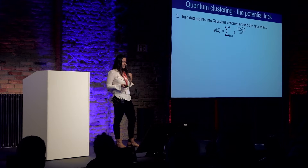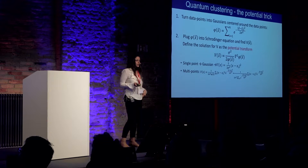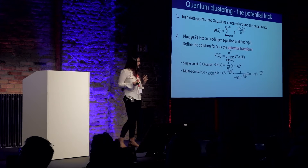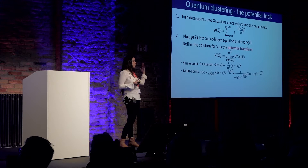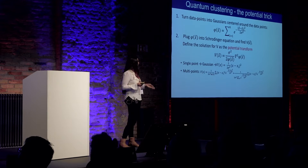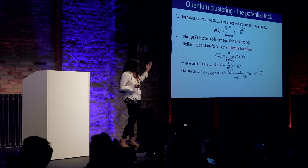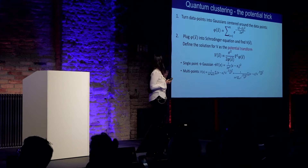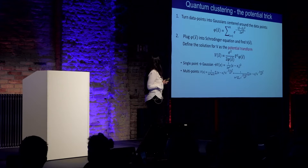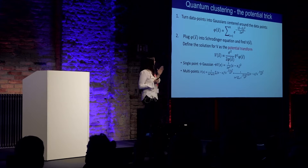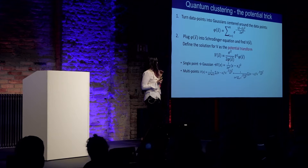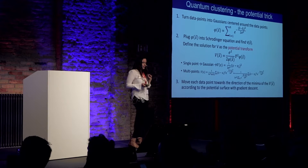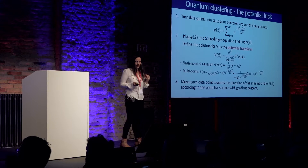As this is a probability distribution, we can plug it into the Schrödinger equation to find the potential. The Schrödinger equation is normally used by physicists to calculate the probability distribution given the potential — but this is a reverse engineering process: given the probability distribution, you calculate the potential. We define the solution as the potential transform, which is simply the second derivative of the density function divided by the function itself. Then you move each data point towards the minima of the potential according to the potential surface with gradient descent, for example.